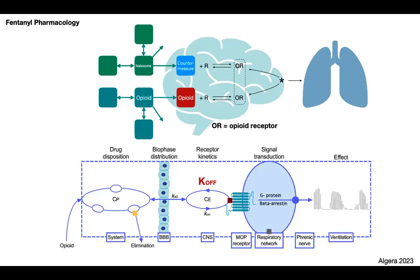This is a schematic description of what happens to an opioid when it's injected into the body. It distributes across all of the tissues. The final active fraction crosses the blood-brain barrier and interacts with the receptor. What we need to realize is that one very important factor is receptor kinetics. One of the most important parameters in the deep model is parameter KF — the off-rate constant of the opioid.